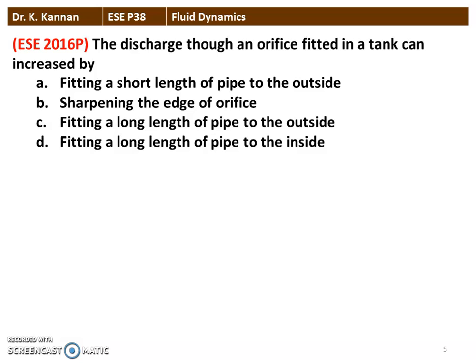The next question is from the 2016 question paper. The discharge through an orifice fitted in a tank can be increased. We have a tank fitted with the orifice at the bottom. The correct option is fitting a short length pipe projecting outside — if you attach a small pipe projecting outside to the tank, the discharge can be increased.